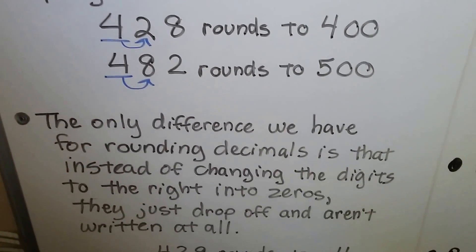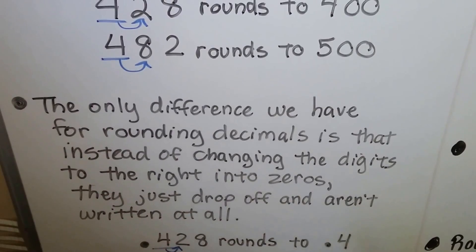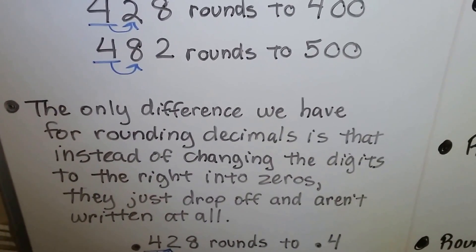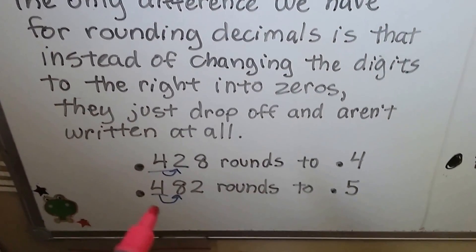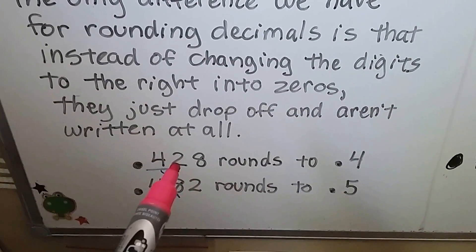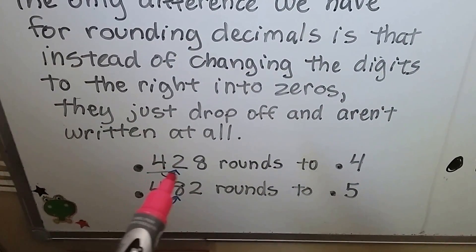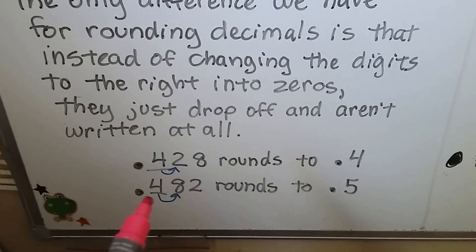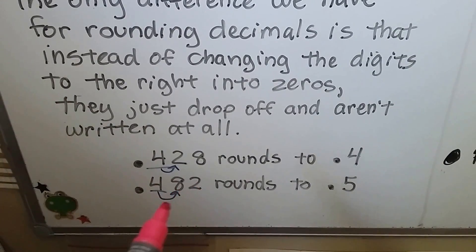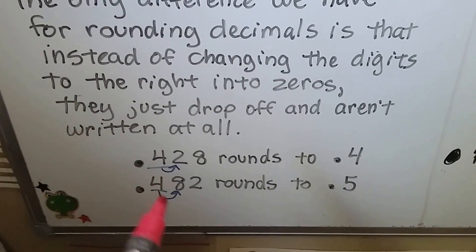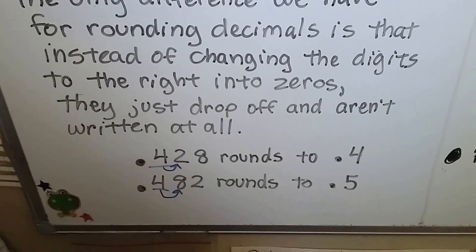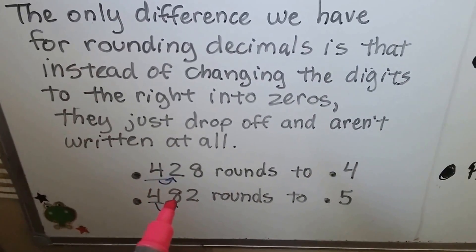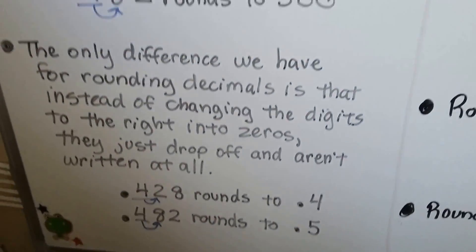The only difference we have for rounding decimals is that instead of changing the digits to the right to zeros, they just drop off and aren't written at all. So if we had 0.428, the 2 tells the 4 to stay the same, and the 2 and the 8 drop off — so we have 0.4. If we have 0.482, the 8 tells the 4 to go up to a 5, and then the 8 and the 2 drop off, and we just have 0.5. It's the same rules — they just drop off and aren't needed anymore.